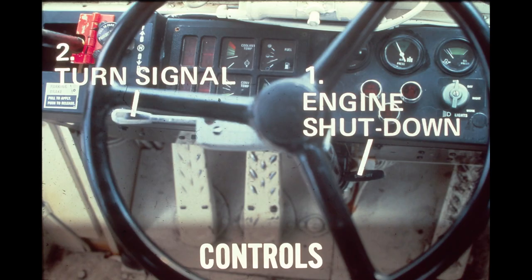The engine shutdown handle is located under the instrument panel to the right of the steering column. It controls the fuel supply to the engine. When the handle is pulled out, fuel to the engine is shut off and the engine stops. Also visible in this photo is the optional turn signal hazard attachment. Move the handle up to indicate a right turn, down for a left turn, and pull it out for hazard lights.